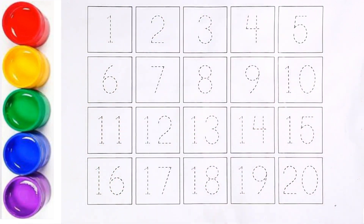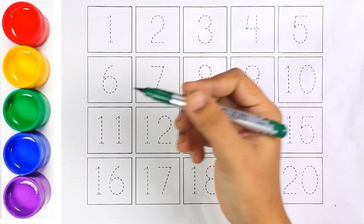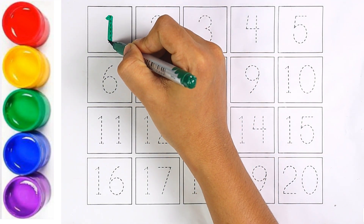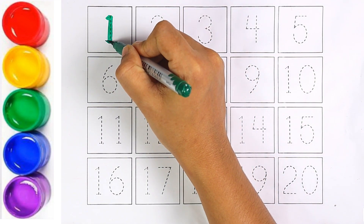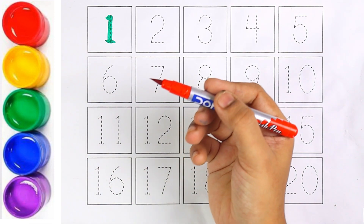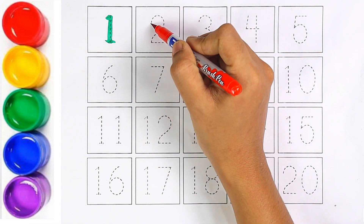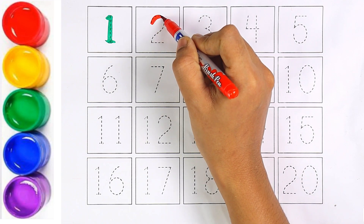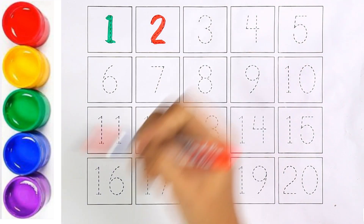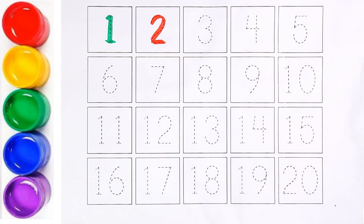Let's start writing numbers. Let's start with number one. I am using green color. Number one. Red color. Number two.